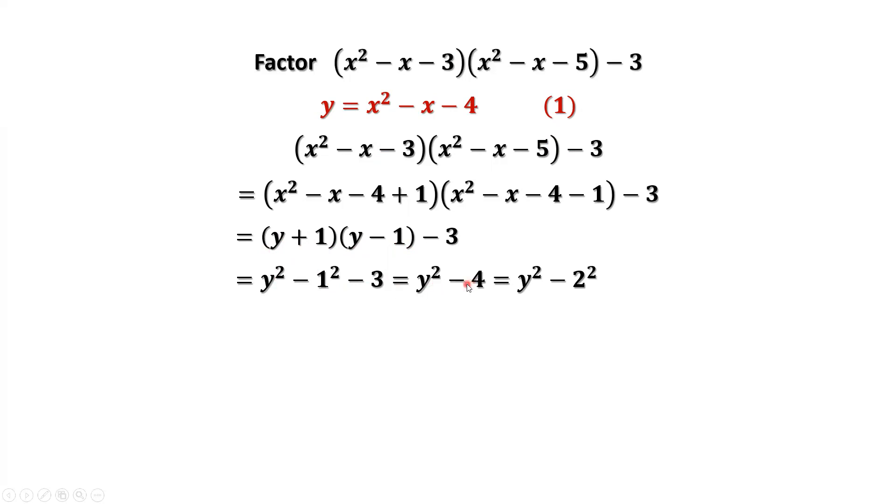Sorry, minus 1 minus 3, then put them together as minus 4. Now we use the formula again. y squared minus 2 squared equals y plus 2 times y minus 2.